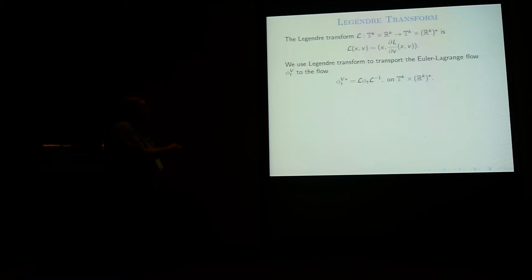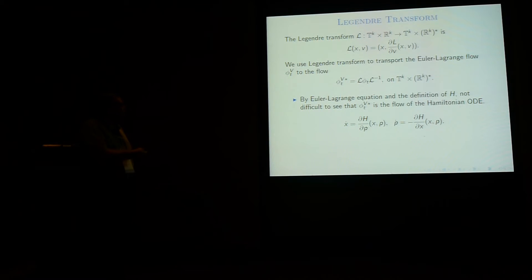And what you can do, you can use this Legendre transform to transport the Euler-Lagrange flow to a flow on Tᴷ cross the dual space of Rᴷ, or if you want on the space of position and momentum, you just conjugate by the Legendre transform. And if you do that, and you just look at the Euler-Lagrange equation, and you just realize very quickly that this flow is the flow of the Hamiltonian ODE that you have here. Here, x dot is dH over dp, p dot is minus dH over dx. What this means, it means that if you just conjugate the Euler-Lagrange flow, you just get the Hamiltonian flow of H.